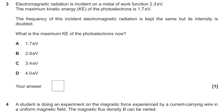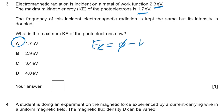Number three: EM radiation with a given work function and maximum KE. The frequency of the incident EM radiation is kept the same, but the intensity is doubled. The maximum KE of the photoelectrons is still 1.7 electron volts, because the equation for EK has nothing about intensity — it's just to do with frequency and the work function.